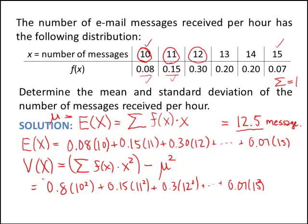And after I compute that sum, what I'm going to do is subtract off the mean squared. And we found the mean to be 12.5. And then I square that.